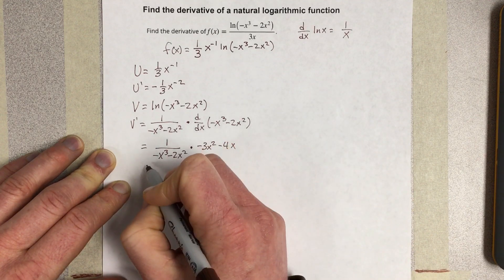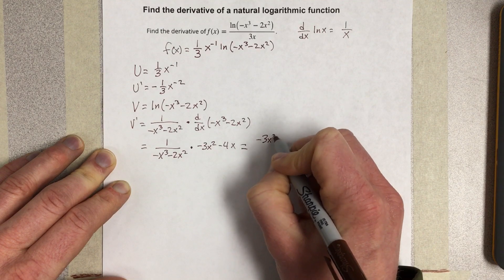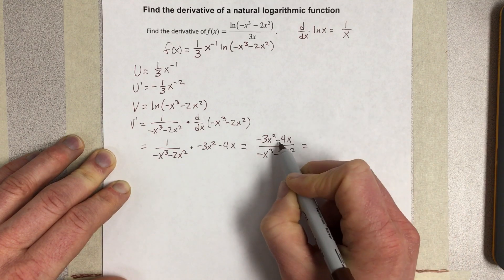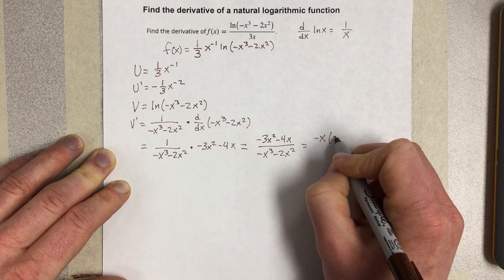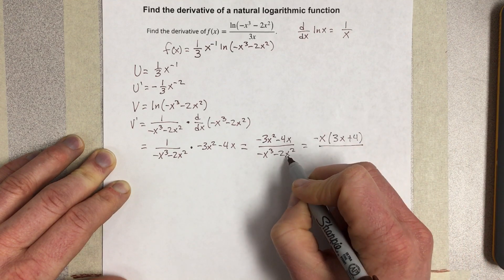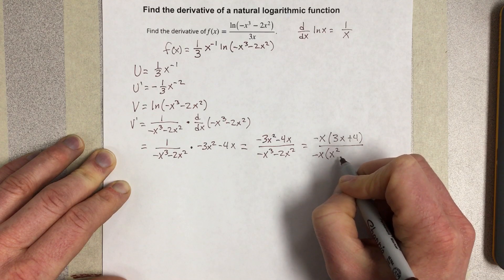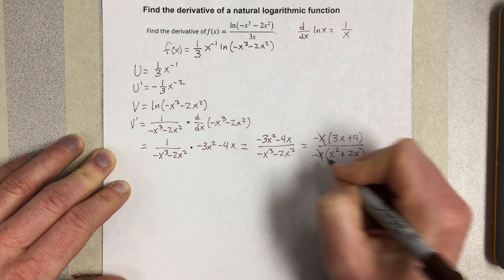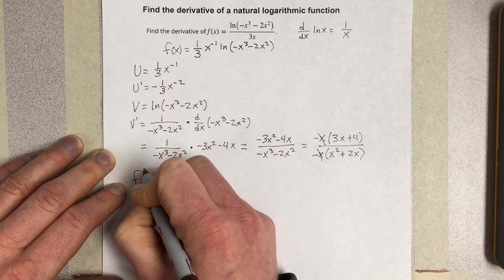So I can simplify that a bit more. Bringing that to the top, I would have (-3x² - 4x) over (-x³ - 2x²). Then I'm going to factor out a negative x squared, which cancels, and I end up with (3x + 4) over (x² + 2x).